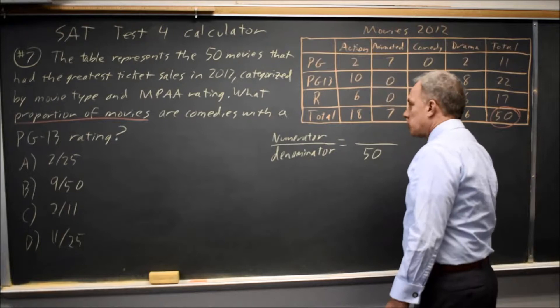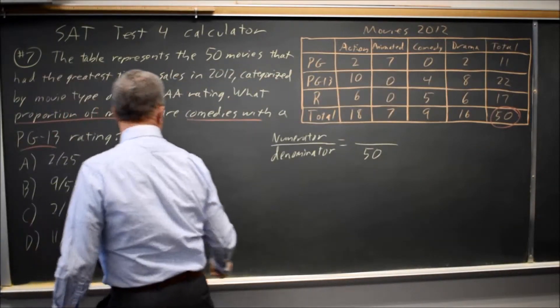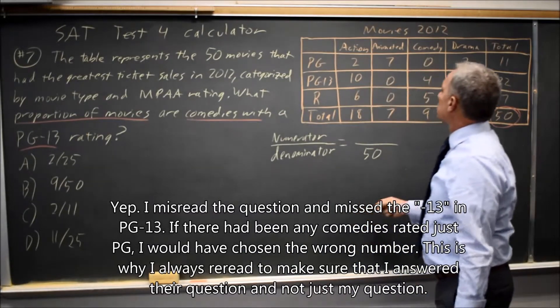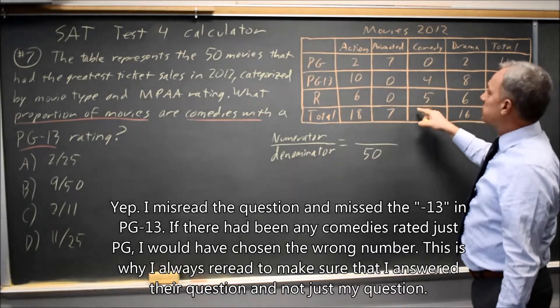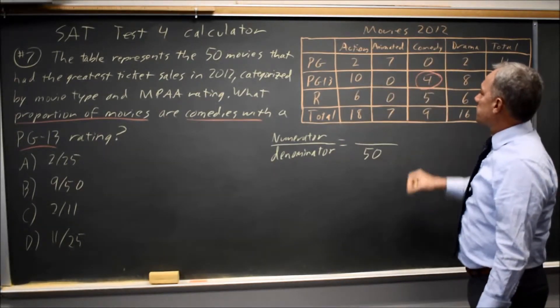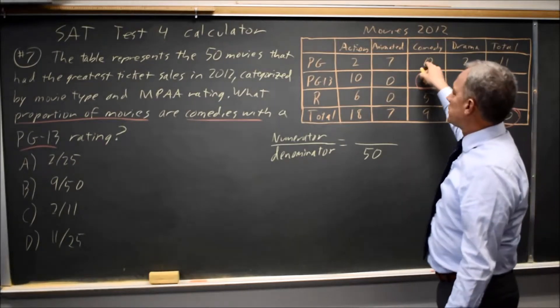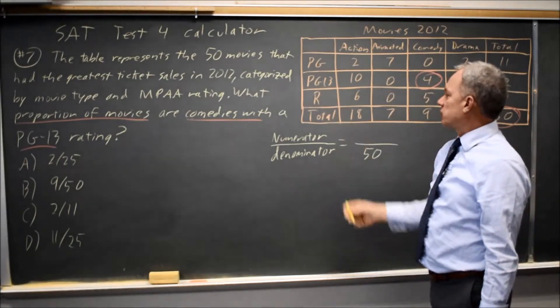Then the second part is comedies with PG-13 rating. That would be the comedy column, PG-13 row. These four movies only are both comedies and PG-13, and that's the proportion they're asking for.